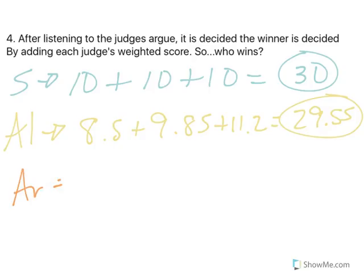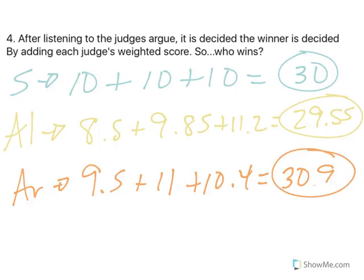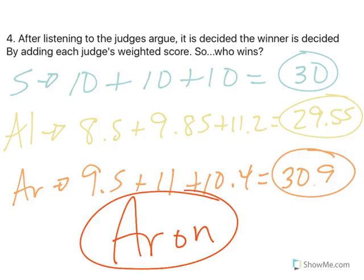And then Chef Aaron scored a 9.5, an 11, and then a 10.4 for a total of 30.9. So when we put them all together, Chef Aaron is our overall winner.